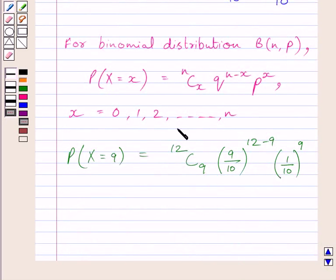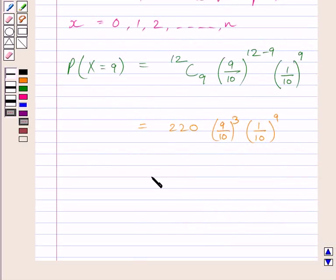Simplifying the right-hand side, we get 220 multiplied by 9 upon 10 cubed multiplied by 1 upon 10 raised to the power 9. This can be written as 220 multiplied by 9 cubed upon 1000 multiplied by 1 upon 10 raised to the power 9.